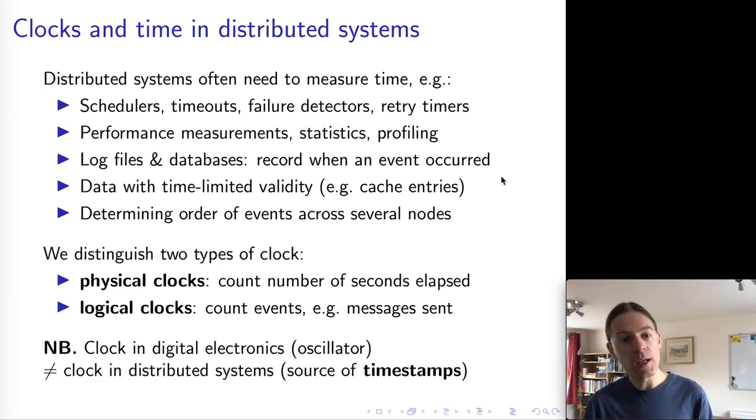Now, just a little terminology clarification. The term clock is also used in digital electronics, and you've come across it there, where it means a signal which produces pulses of ones and zeros at a certain regular frequency. In distributed systems, we use the word clock in a slightly different way. So the meaning in distributed systems is a clock is something that you can ask for a timestamp. So it tells you what the current time is. And the current time is represented as a timestamp, which might be the current date and time.